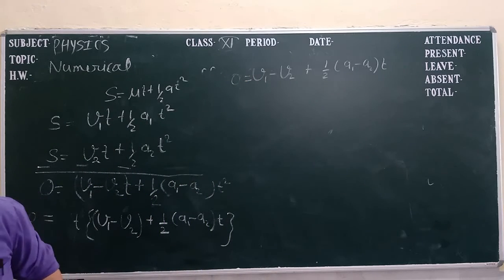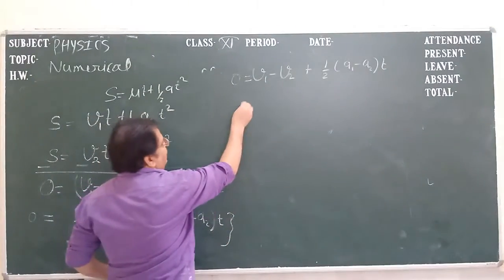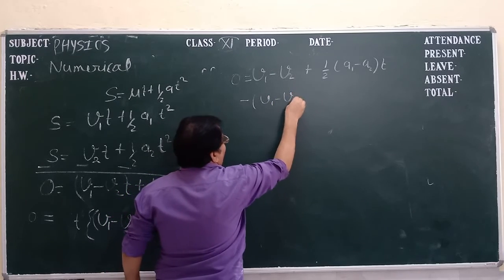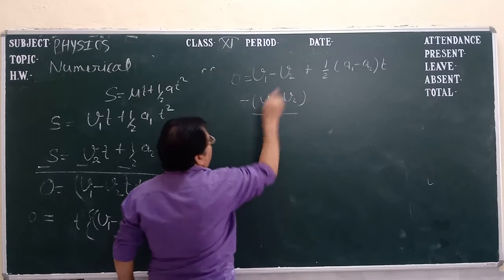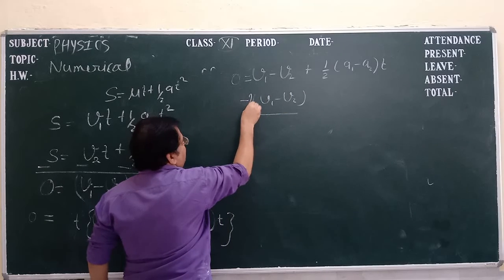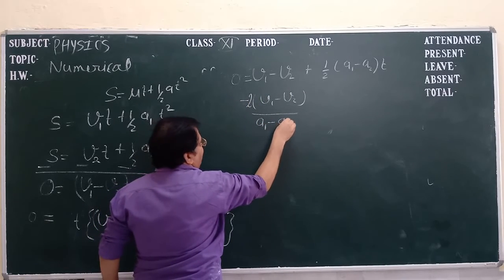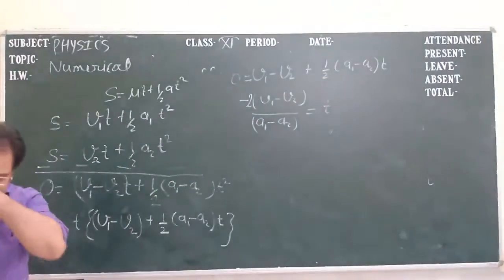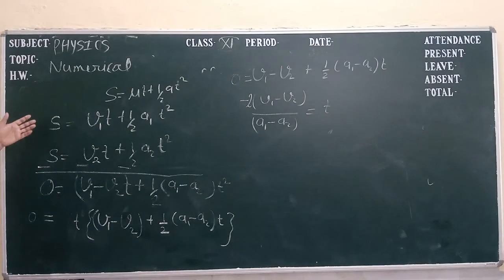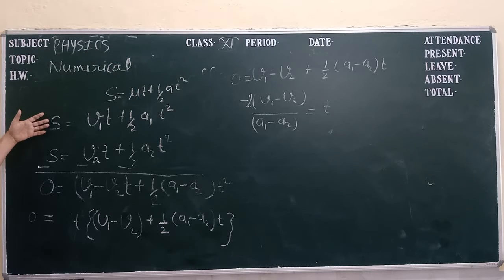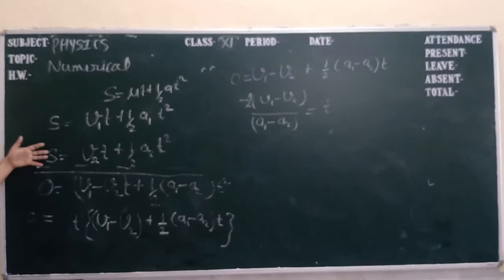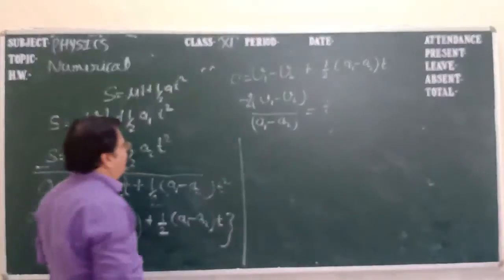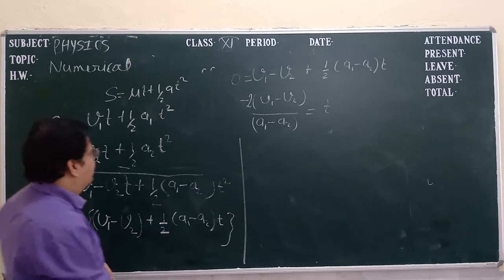The equation is v1 minus v2 plus 1 by 2 a1 minus a2t equal to 0. From this equation we can find the value of t. By substituting the value of t in both the equations, either we are putting the value of t in the first equation or in the second equation, we can find the value of s.